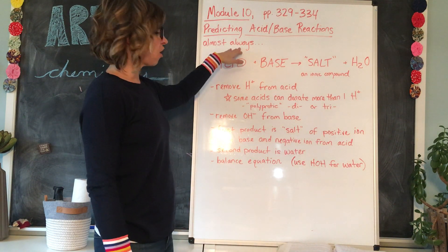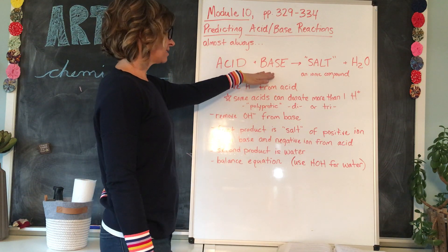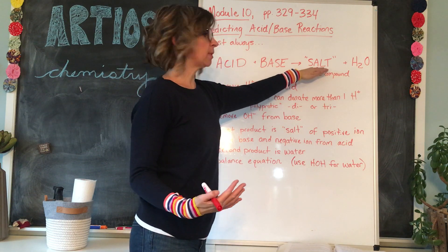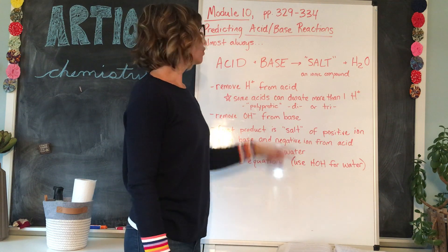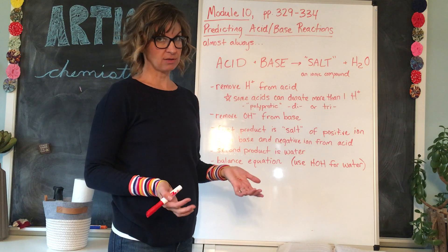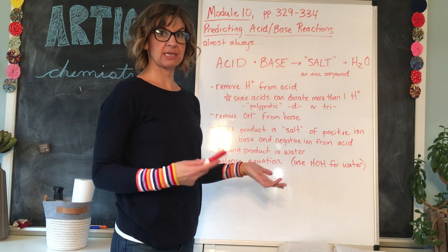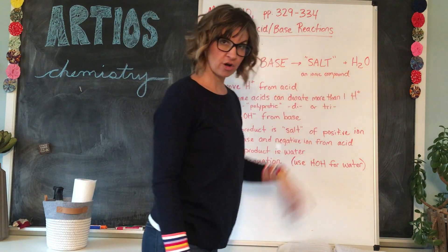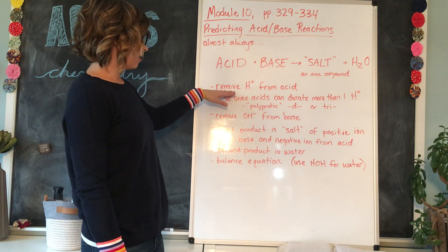Almost always, you are going to have an acid plus a base, and you will yield a salt — which is just a term for an ionic compound. We call NaCl table salt, but that's just one example, because it's an ionic compound. So we have an ionic compound, or a salt, and water.